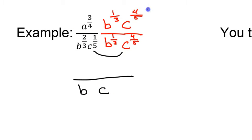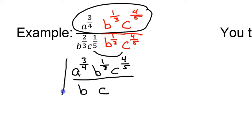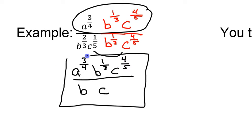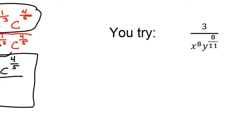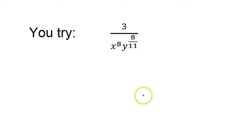In the numerator, I copy everything down: I still have a to the 3/4 power, but now I also have b to the 1/3 power and c to the 4/5 power. That is how you rationalize the denominator — notice, no more radicals. Go ahead and pause the video; here's a problem for you to try on your own. Pause the video, try the problem, and then run the video to see how you did.